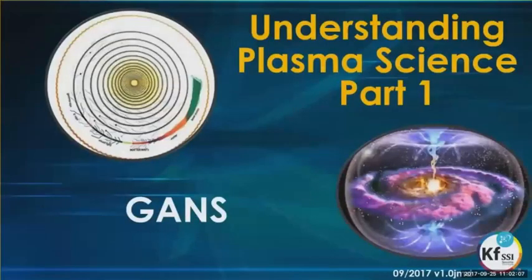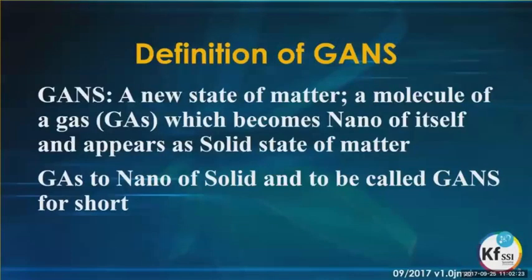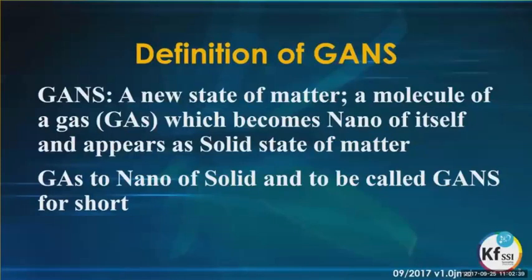The definition for GANS is a new state of matter — a molecule of a gas which becomes nano of itself and appears as a solid state of matter. Gas to nano solid is called GANS for short.